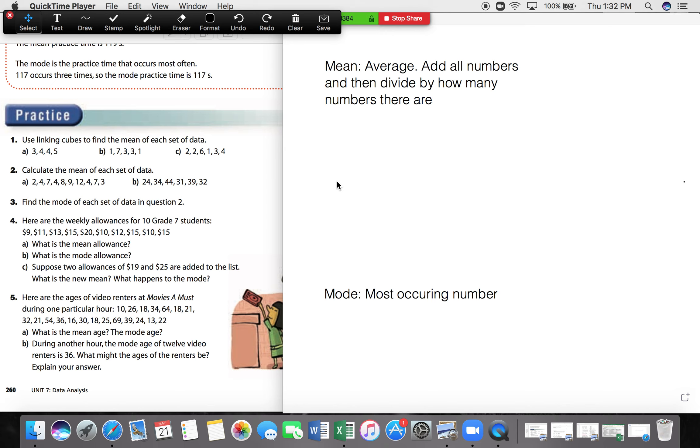So underneath, each student gets paid their certain allowance. Student A, we'll say, gets $9, student B $11, student C $13, and so on down that list for 10 of them.